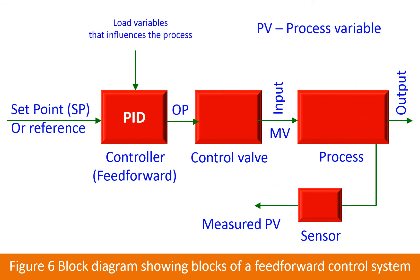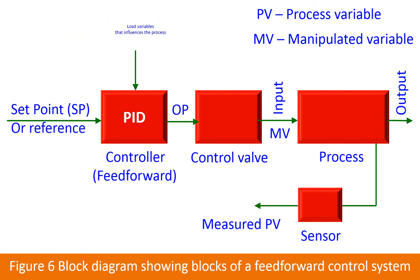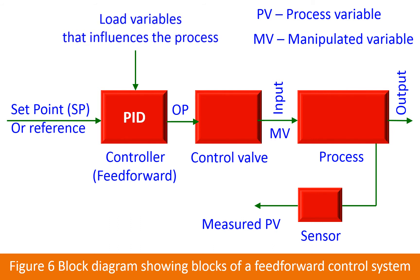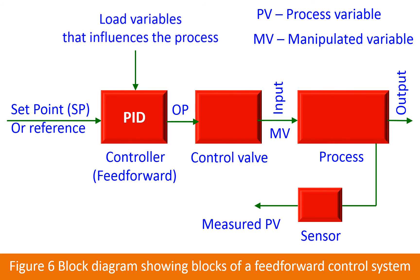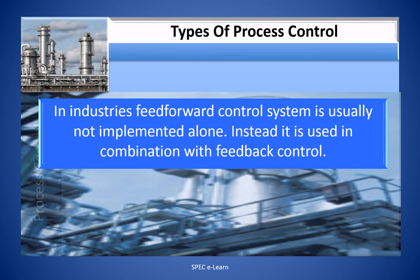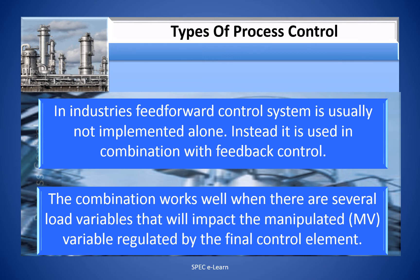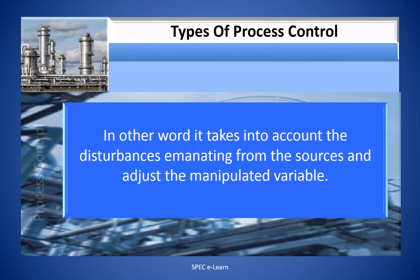A feed forward control system is illustrated in the form of a block diagram in this figure. Note that the measured process variable PV is not used as a feedback signal in the controller. Instead, load variables are fed to the controller, so the controller action is in response to the variation in load disturbances to the process — this is a key difference. In industries, feed forward control system is usually not implemented alone. Instead, it is used in combination with feedback control. The combination works well when there are several load variables that will impact the manipulated variable regulated by the final control element, taking into account the disturbances emanating from various sources and adjusting the manipulated variable accordingly.